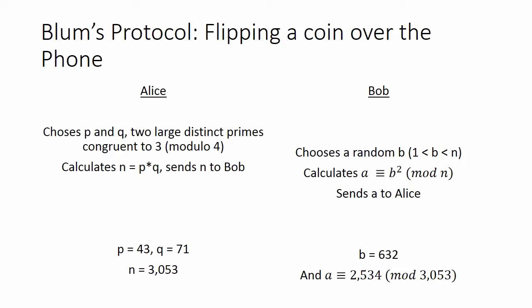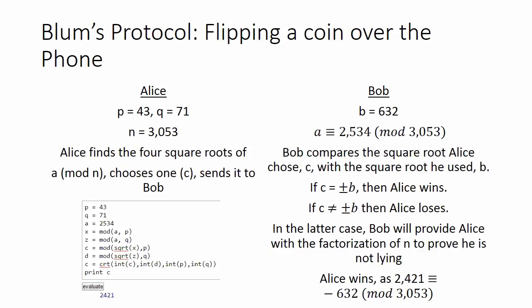First, Alice chooses p and q which are distinct large primes. Both must be congruent to 3 modulo 4. In our example, p and q will be small numbers to make it easier to read. Alice chooses p as 43 and q as 71.